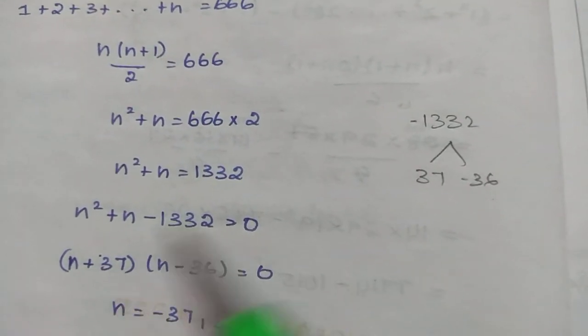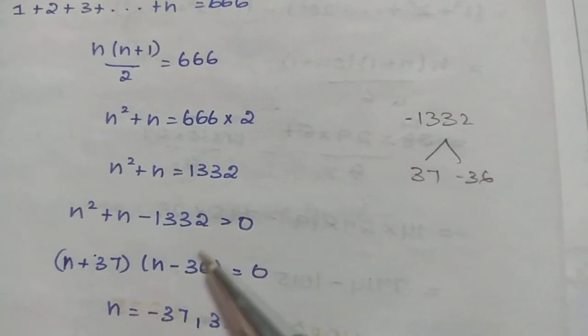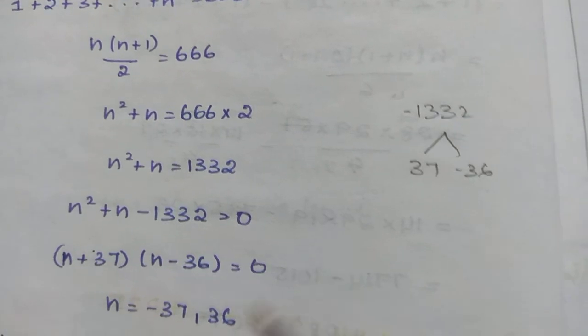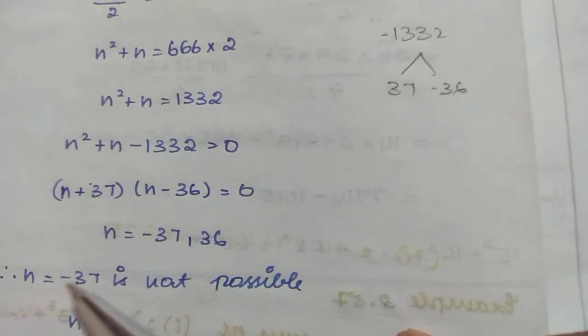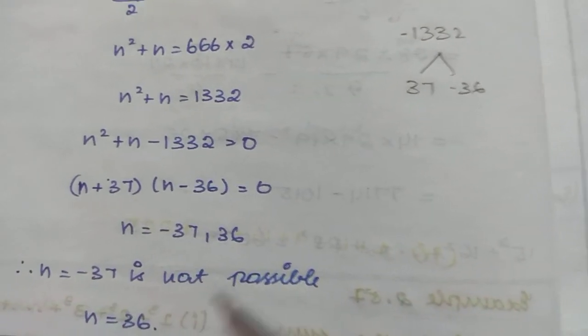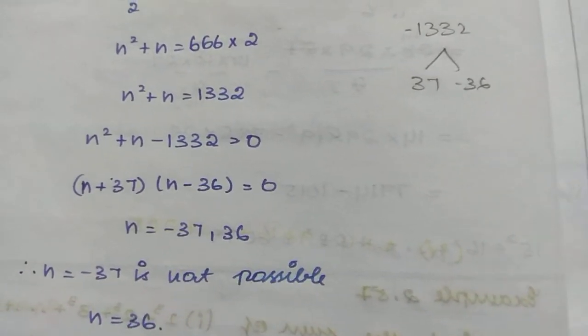Therefore n = -37 or n = 36. Since n cannot be negative, n = -37 is not possible. Therefore, n = 36.